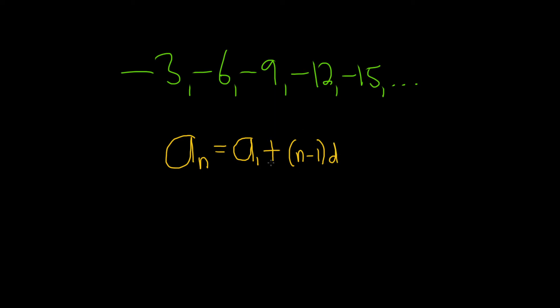d here is called the common difference, and you can look at this and find the d. It's what number do you keep adding over and over again. So to get from negative 3 to negative 6, we're going to add negative 3. And then to get to negative 9, you also add negative 3. And then to get to negative 12, you also add negative 3. And then to get to negative 15, you also add negative 3. So d is equal to negative 3.